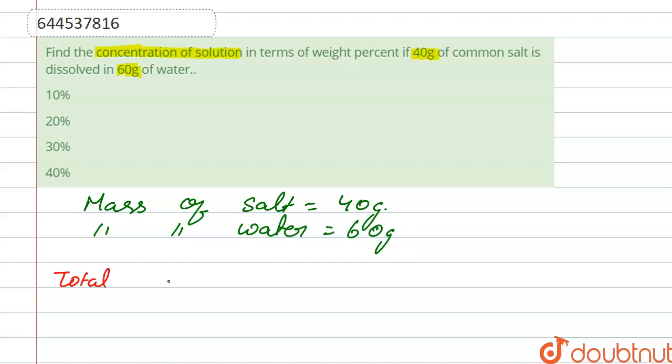So we calculate the total mass of solution. Total mass of solution, that is 60 plus 40, which is 100 grams.